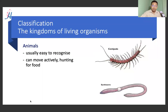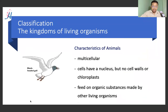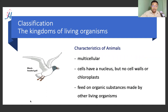Thank you so much for joining us. Animals are easy to recognize and they can move actively, hunting for food. Animals are characterized as being multicellular, meaning they are made up of many cells. Animals do not have chloroplasts in their cells, so they cannot photosynthesize. Therefore, they feed on organic substances made by other living organisms.